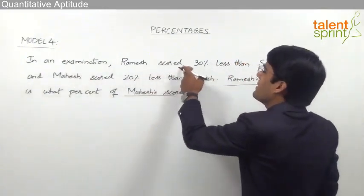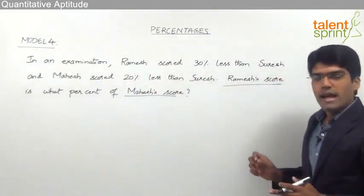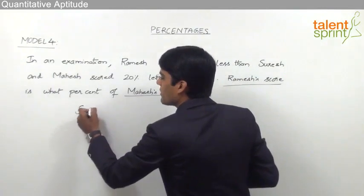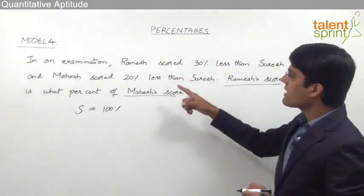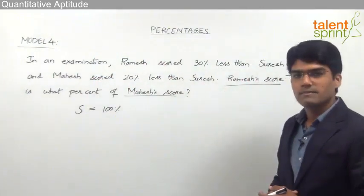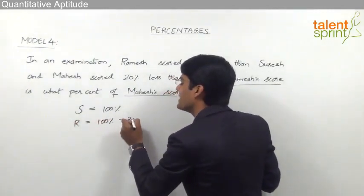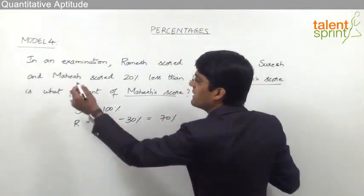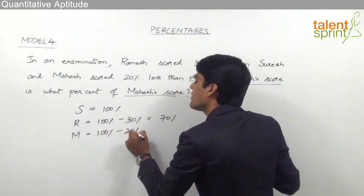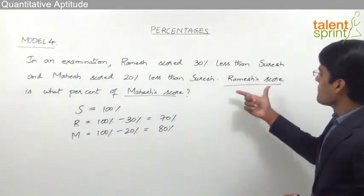The question says Ramesh scored 30 percent less than Suresh and Mahesh scored 20 percent less than Suresh. No specific marks are given for any of them. So let us assume Suresh's score is equivalent to 100 percent, since we are comparing Ramesh's and Mahesh's scores with Suresh's. Ramesh scored 30 percent less than Suresh, so Ramesh's score is 100% − 30% = 70%. Mahesh scored 20 percent less, so Mahesh's score is 100% − 20% = 80%.